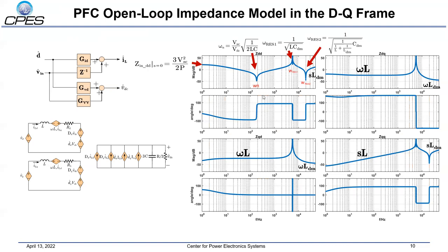This figure shows the whole PFC converter's open-loop impedance. Below a certain frequency, the PFC impedance is dominated, and above that, the input filter impedance is dominated. For ZDD, a resonant point between the boost inductor and the DC capacitor ωn exists at low frequency. At very low frequency, ZDD presents as a resistor, and its gain depends on the input voltage and power. At low frequency, ZDQ, ZQD, and ZQQ present as the corresponding terms of the boost inductor impedance in the DQ frame. At high frequency, there are two resonant frequency points resulting from the filter impedance in ZDD and ZQQ. At very high frequency, the total impedance presents as the corresponding terms of the differential mode inductor DQ impedance.